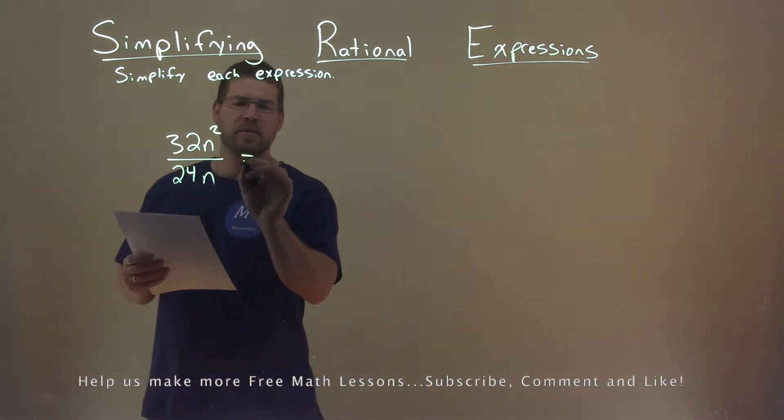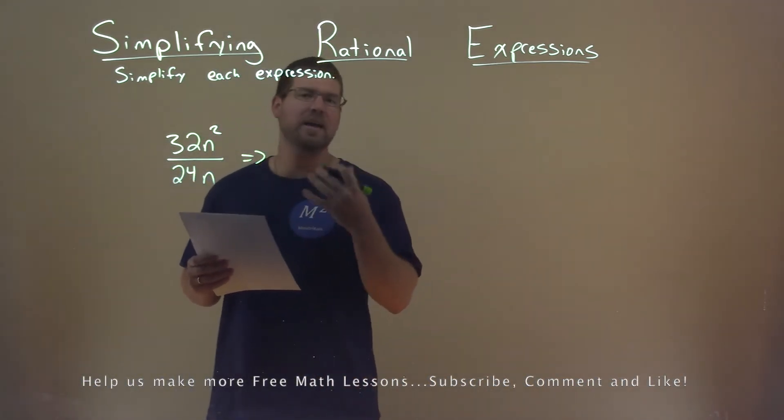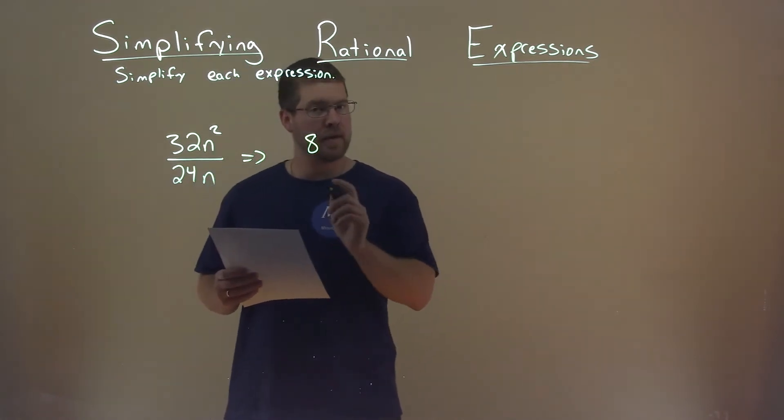First thing I'm going to do is, well, I notice the numerator and denominator, 32 and 24, 8 is in both of them, so I'm going to pull out an 8, and then n is also in the numerator and the denominator.